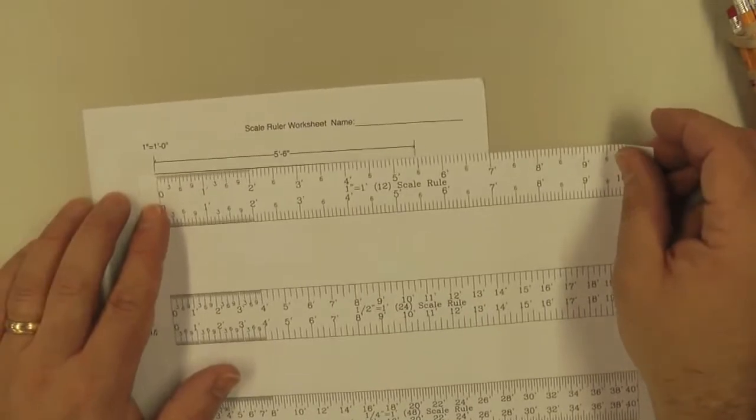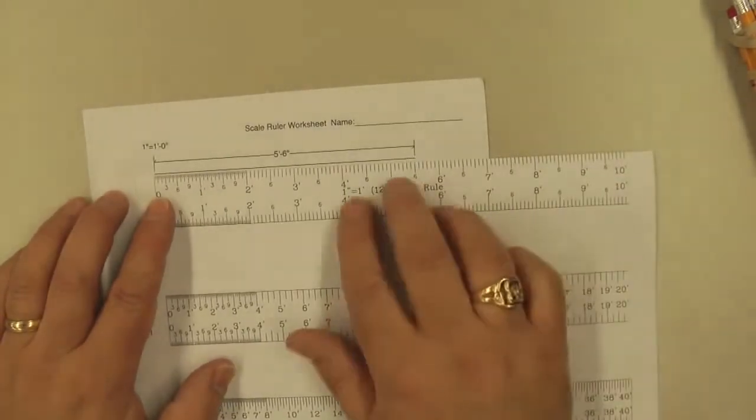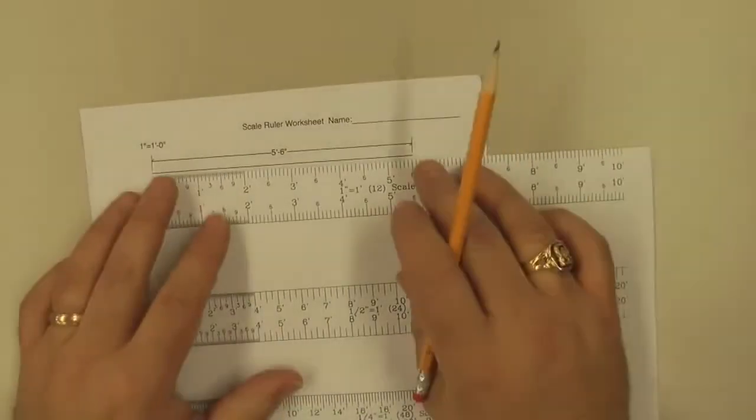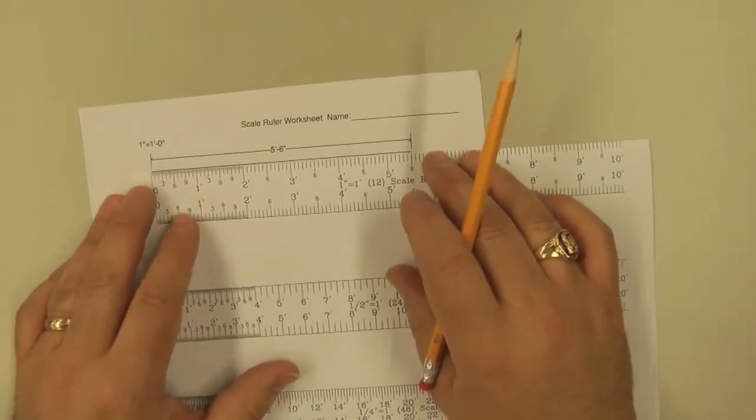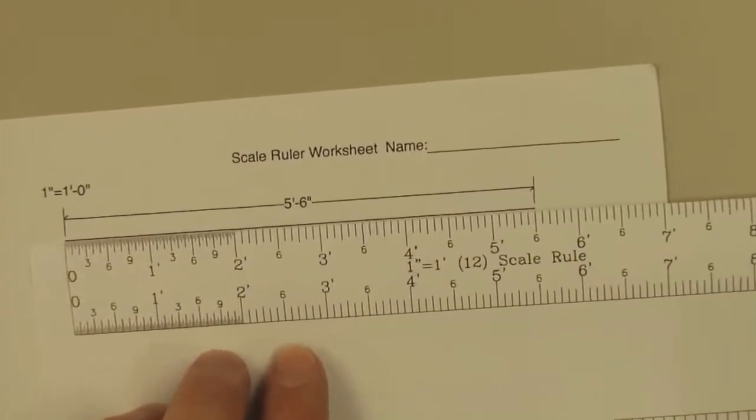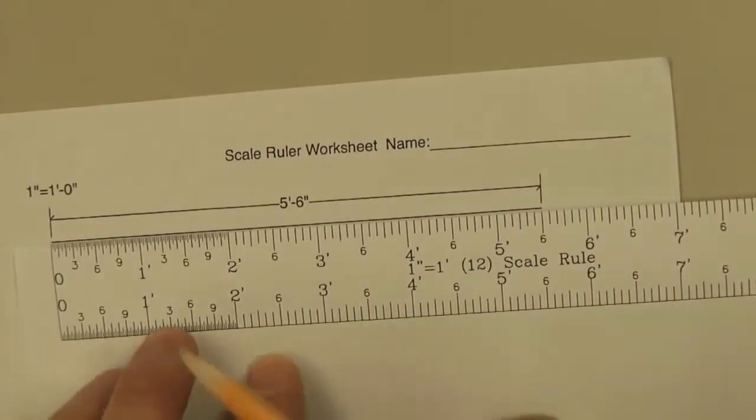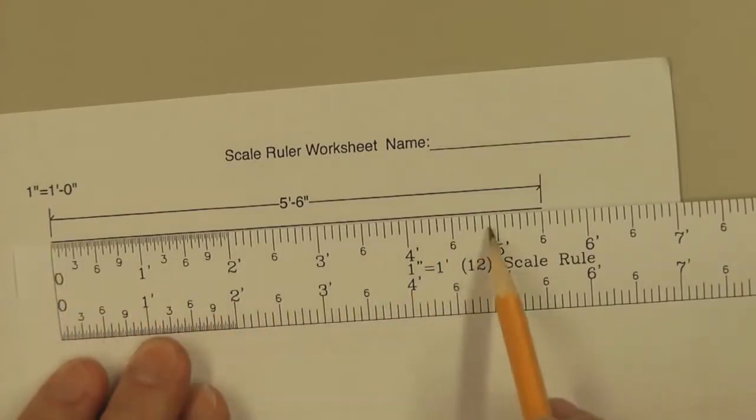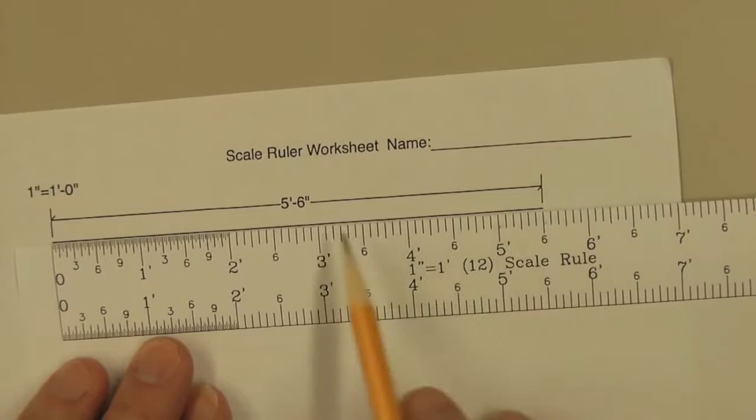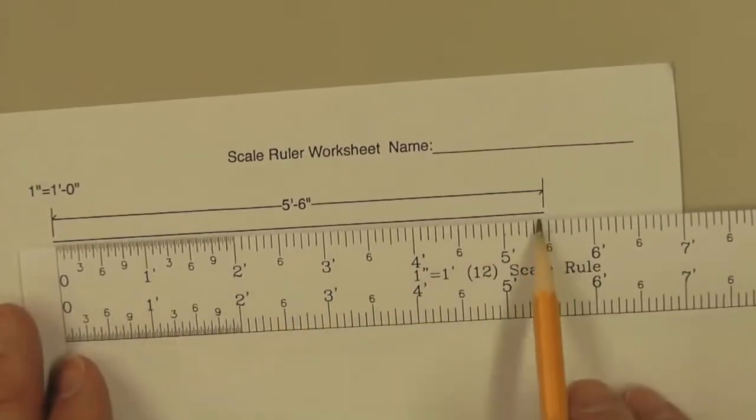And if we line up our paper like so to the 0 on one end in the 1-inch scale, it's going to go from 0 to 5 foot 6 inches. So this line here is 5 foot 6 inches long.